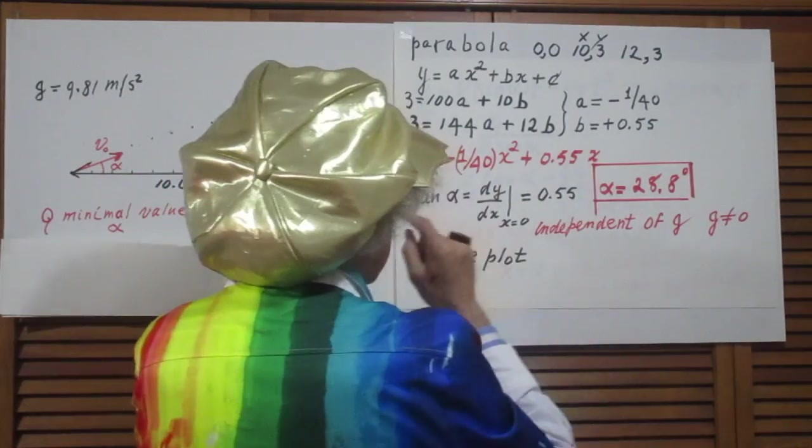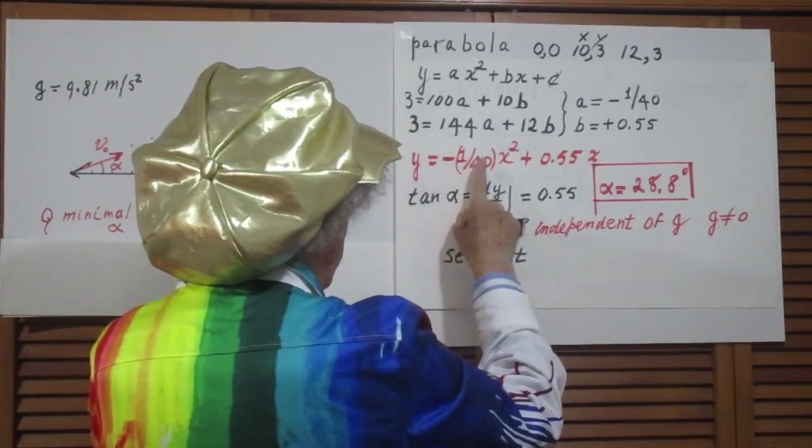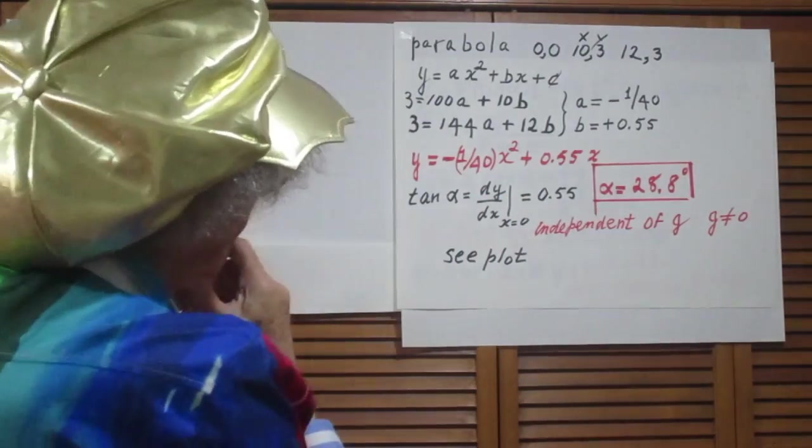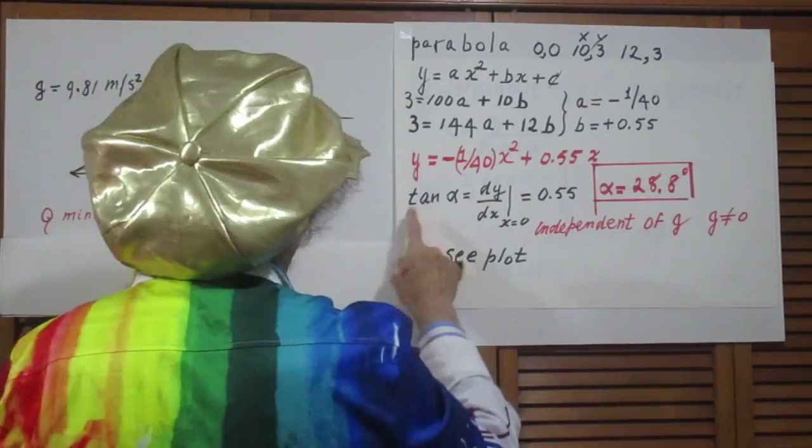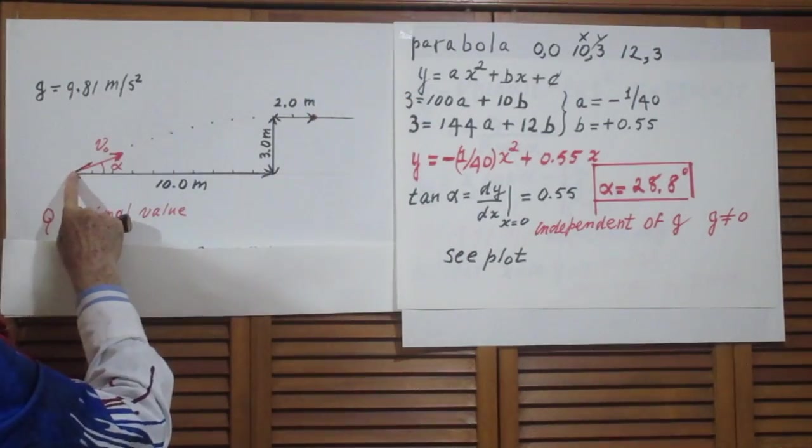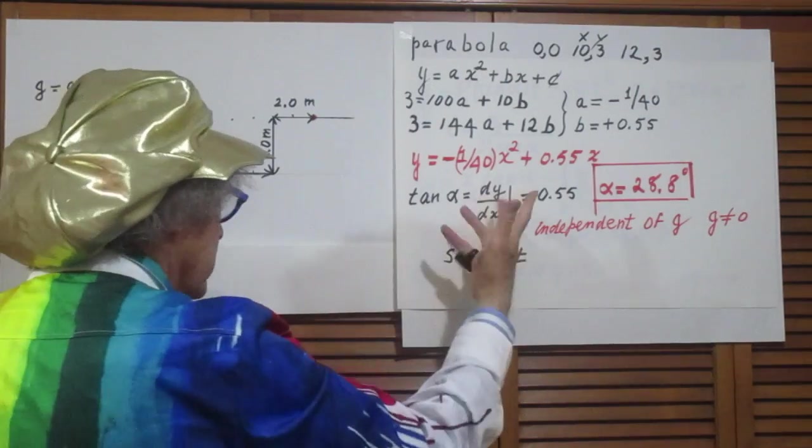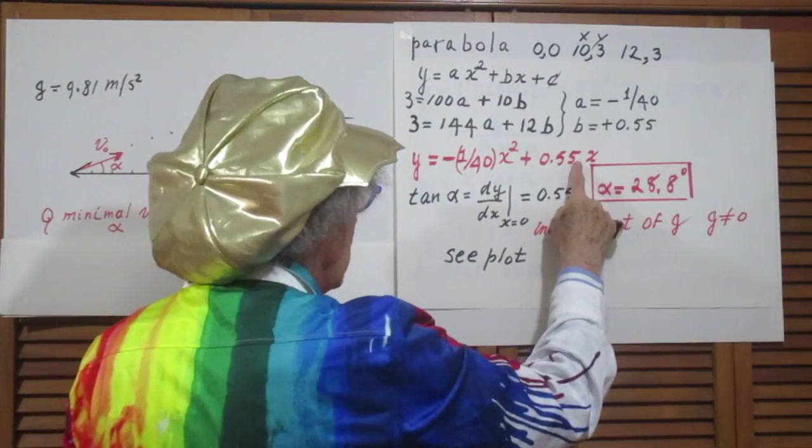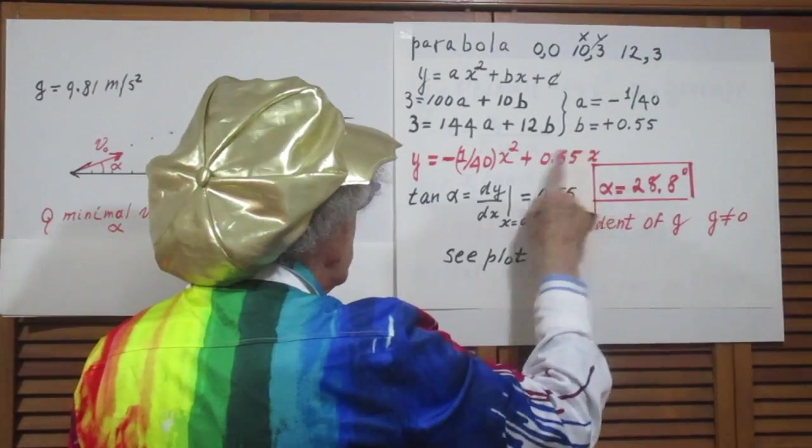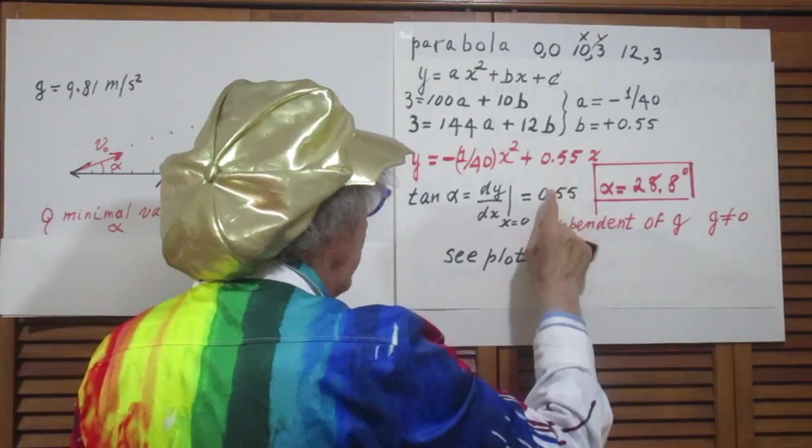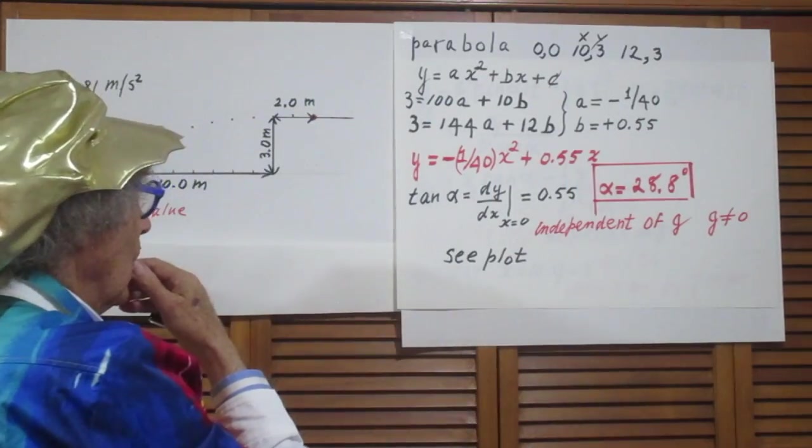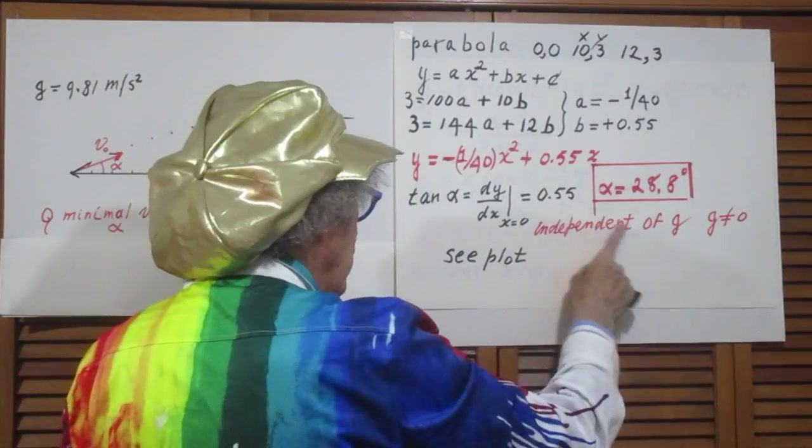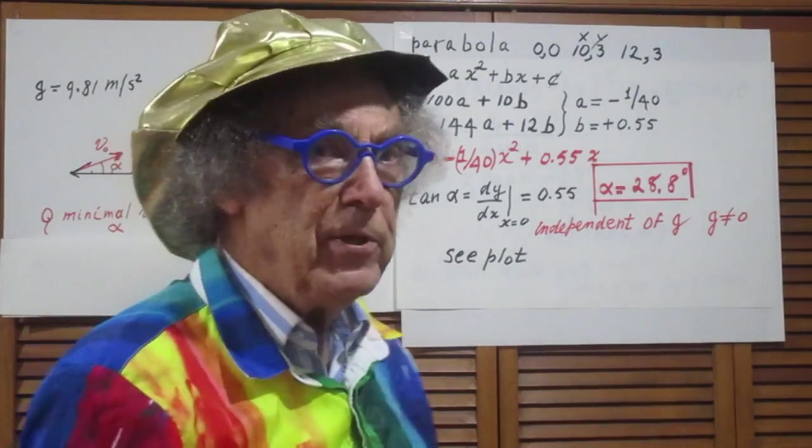So the equation of the parabola in units of meters is y equals minus 1 over 40 times x squared plus 0.55 times x. The tangent of the angle alpha right here at x equals 0 is dy/dx. When you take dy/dx of this equation and then substitute for x equals 0, you end up with 0.55. So the tangent of alpha, which is the smallest value possible, is 0.55. Alpha equals 28.8 degrees.